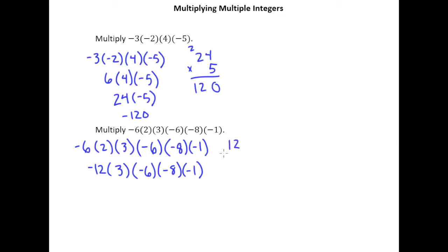I could rearrange things if I wanted to, but I'm just going to keep things simple in this example. So 12 times 3 is 36, so a negative times a positive gives me a negative 36.